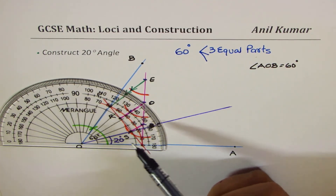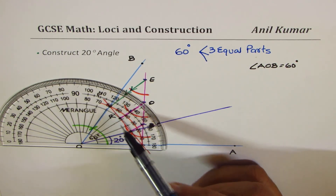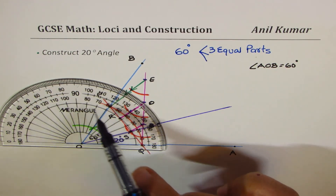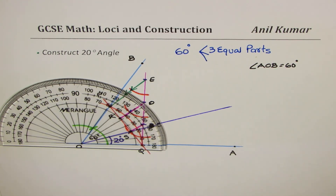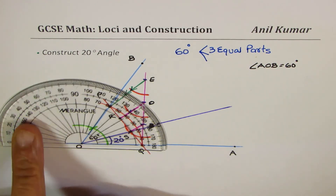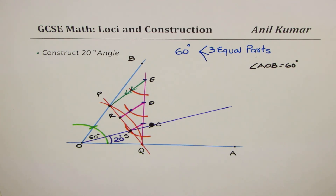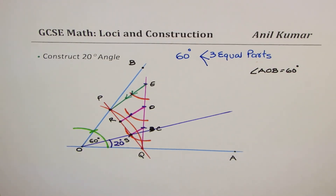If we extend further, we could get 40, 60 degrees, and by going around we could get all multiples of 20 degrees in one shot. With this kind of construction you could construct all multiples of 20 degrees. I hope you find it interesting and useful. Try to provide reasoning for each step. As a genuine student you should be able to appreciate and reason out all steps. Feel free to write your comments, share your views, and if you like and subscribe, that'd be great — thanks for watching!